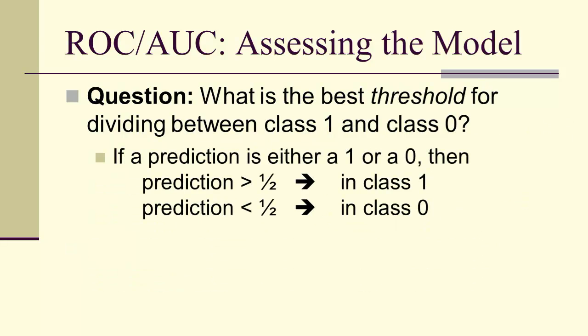Now let's look at this question in a little more detail. If the predictions are either a 1 or a 0, then we can simply set the threshold as a half. And above a half would be class 1, and below a half would be class 0.